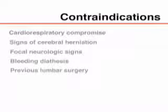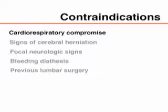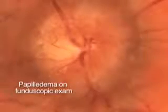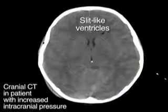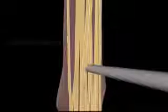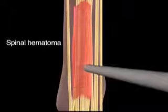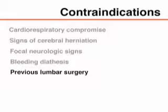There are specific contraindications to lumbar puncture. The condition of patients with cardiorespiratory compromise may worsen as a consequence of the position they need to assume. The procedure should also be avoided in patients with signs of cerebral herniation, incipient herniation, or increased intracranial pressure, and in those with focal neurologic signs. In such patients, cranial CT should be performed before lumbar puncture, although CT may not reveal signs of increased intracranial pressure. There is also an increased risk of spinal hematoma if a coagulopathy is present or if the patient is receiving anticoagulant therapy. Patients who have previously undergone lumbar surgery should be referred to an interventional radiologist.